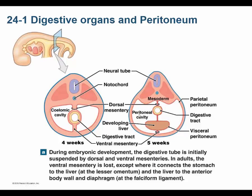Now we're back to testable material. Humans are coelomates - we are deuterostomes, chordates, and coelomates with a true coelom. Notice that the coelom is the body cavity, not the lumen of the digestive tube. The lumen of the digestive tube is not inside our body, but the body cavity is inside our body.